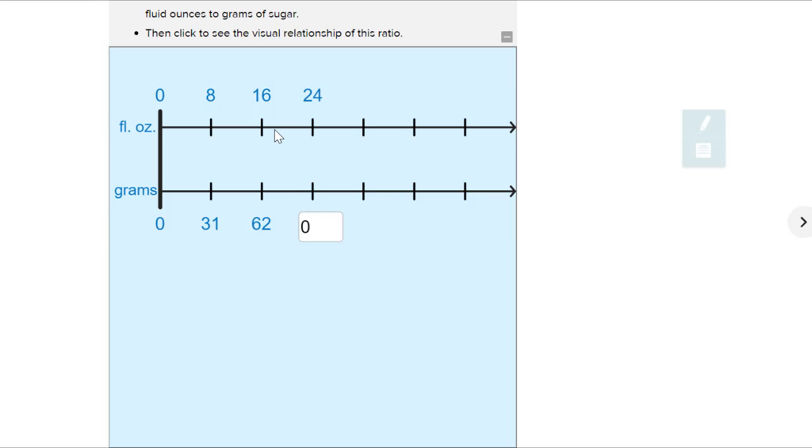And you've just found the equivalent ratio. So 8 to 31, the equivalent ratio is 16 to 62. So that tells us in a 16 fluid ounce soda, there's 62 grams of sugar. Great job.